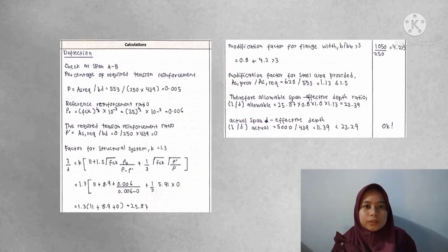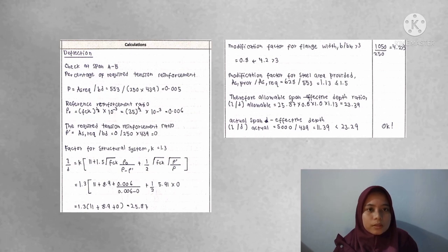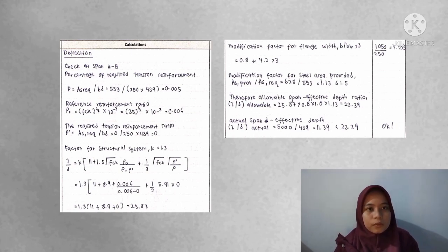Next is deflection. Modification factor for flange width is 4.2, which is greater than 3. Modification factor for steel area provided is 1.13, which is less than 1.5. Allowable span-to-effective-depth ratio is 23.39, and actual span-to-effective-depth ratio is 11.39, which is less than 23.29.